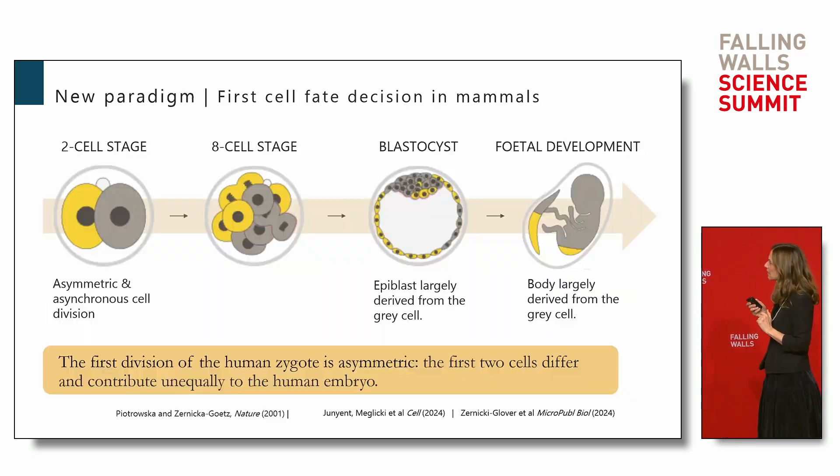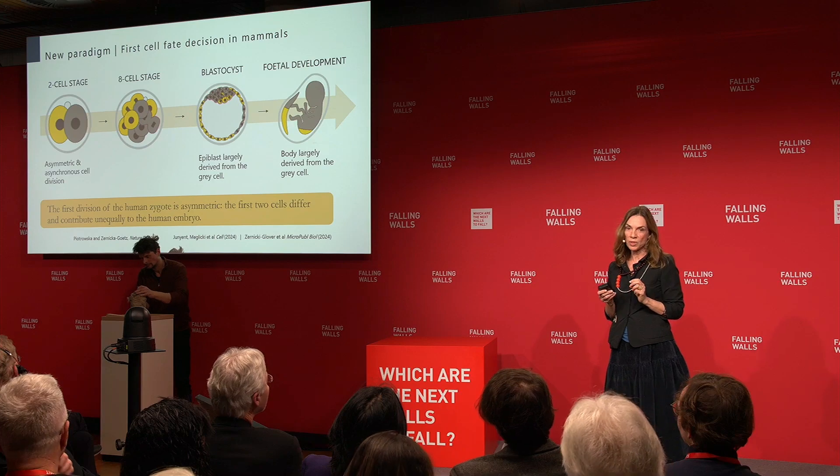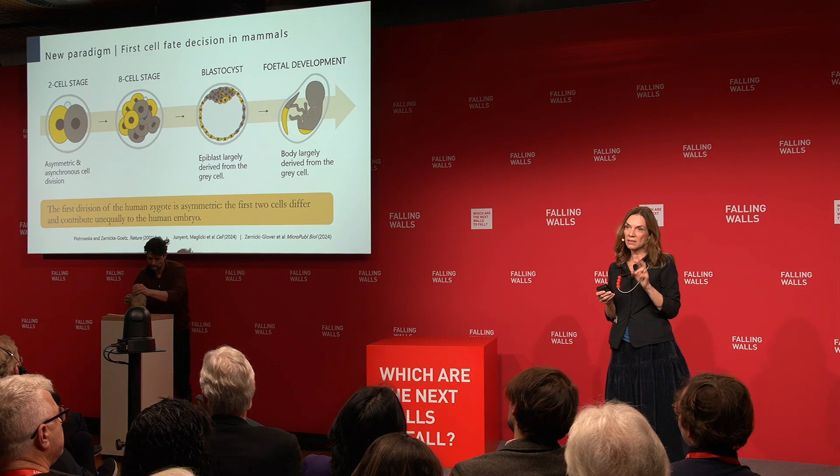These studies revealed something profound: cells actually start to differ from each other at the earliest time possible — the two-cell stage. One of those two cells is the one that divides first, creates the inside cells, and will form the majority of our organs. The second cell divides slower — I say 'decides' in inverted commas, as cells don't make conscious decisions — and contributes to the placenta.